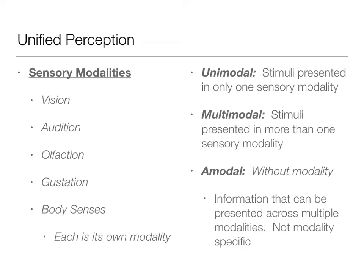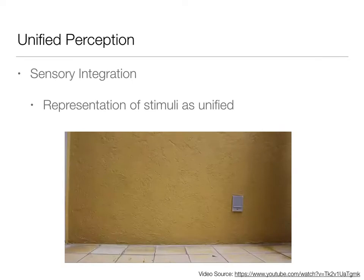We have all these different senses — more than just five, because the body senses are broken up into many different senses as discussed in chapter 12. When we're presented with stimuli in our world, we don't think of them as unimodal or coming from only one sensory channel. We see them as a unified perception — all of these things are integrated together. We have sensory integration.